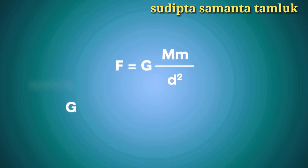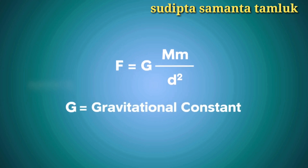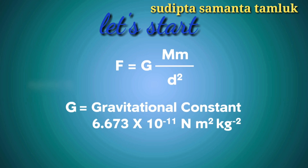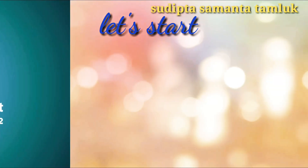Where G is the gravitational constant, and the value of G is equal to 6.673 × 10⁻¹¹ newton meter squared per kilogram squared.